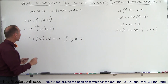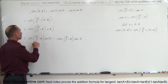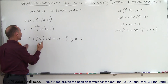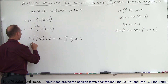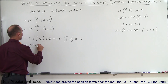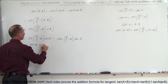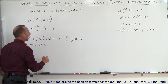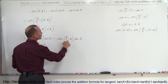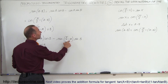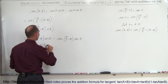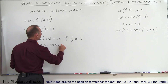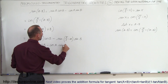We realize that the cosine of pi over 2 minus a is simply the sine of a. So this is equal to the sine of a times the cosine of b. And the sine of pi over 2 minus a is simply equal to the cosine of a, so this becomes minus the cosine of a times the sine of b.